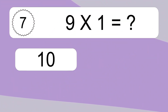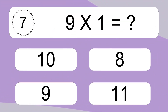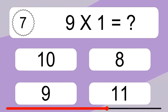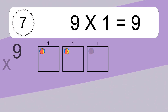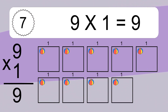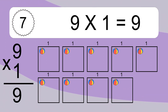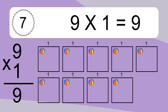9 times 1 equals what? We have 9 boxes, and each box has 1 colorful ball inside. If you count all the balls in all the boxes together, you will have 9 times 1 balls. This equals 9 balls.